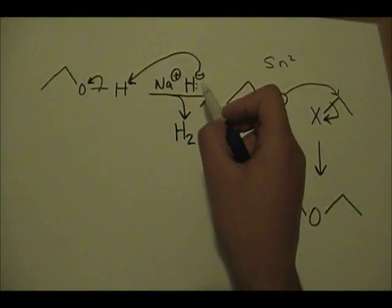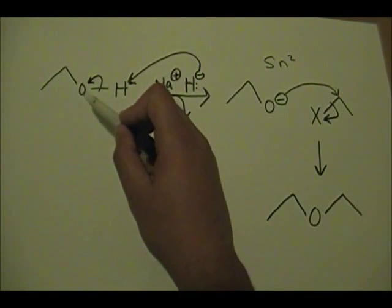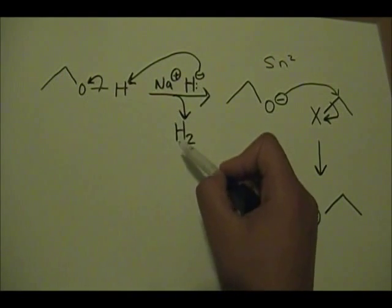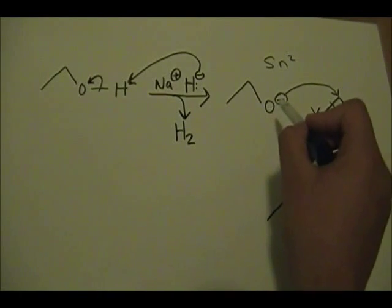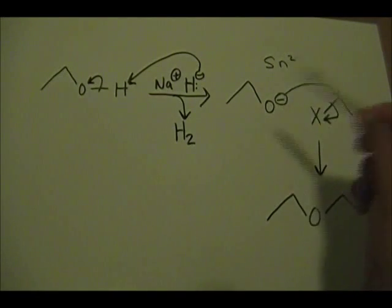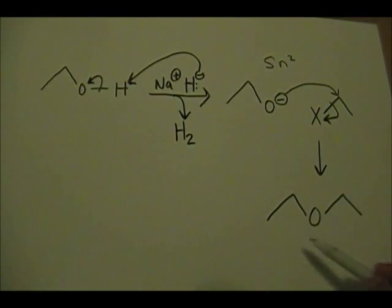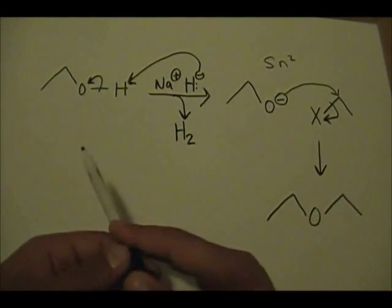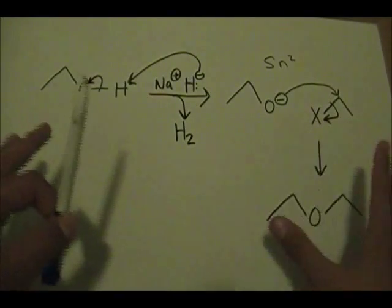First step: hydrogen makes a bond with the hydrogen on the alcohol, and the electrons go into the oxygen, forming H2 as byproduct. Now you have an intermediate with oxygen bearing a negative charge from the extra lone pair. Then it forms a bond with this carbon, kicking off the halogen, and there's your ether.